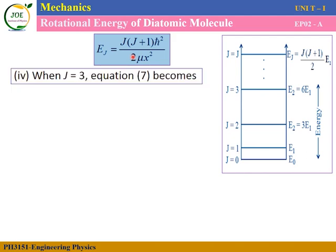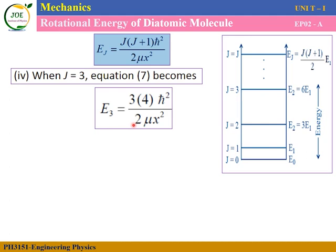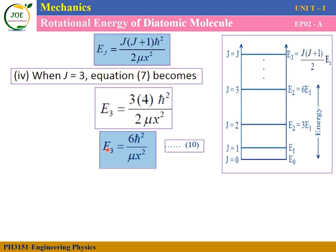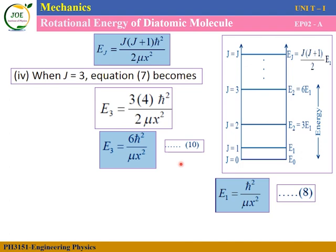For J equals 3: E3 equals 3 times (3+1) times h-cross squared divided by 2 mu x squared. That is 3 times 4 equals 12, divided by 2 equals 6. So E3 equals 6 h-cross squared divided by mu x squared. Comparing with equation eight, E3 equals 6 times E1. This is equation number ten.